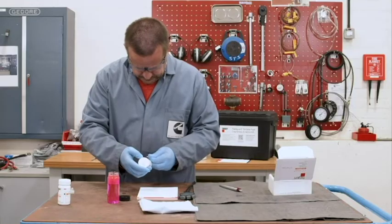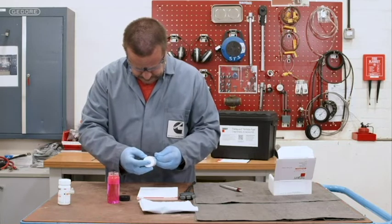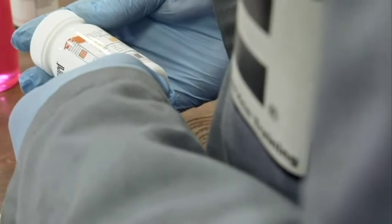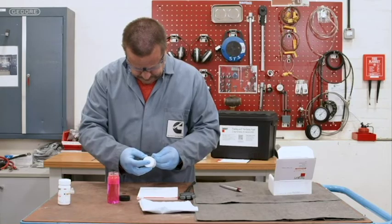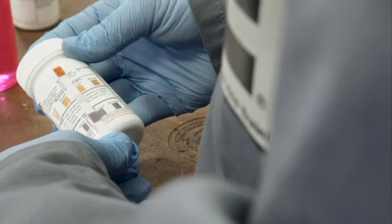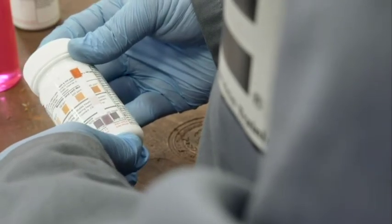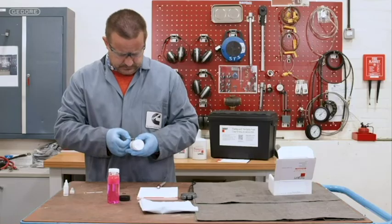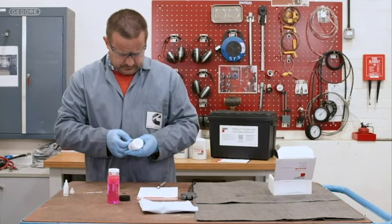The middle pad indicates nitrite. Note down any variation to the color indicated on the bottle. In this case the result is zero. Finally to check the freeze point hold the last test pad against the freeze point scale on the bottle. The result here is 50%. Follow the same process for testing pH and note down the result.